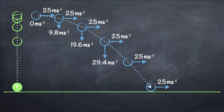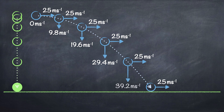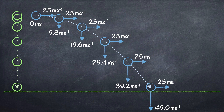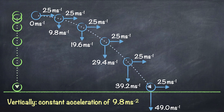The vertical speed of the projectile 4 seconds after being projected is 4 times 9.8, which is 39.2 m/s. Just before it hits the ground, 5 seconds after being projected, the vertical speed will be 5 times 9.8, which is 49 m/s. To sum up, a projectile on Earth, ignoring air resistance, has a constant vertical acceleration of 9.8 m/s².